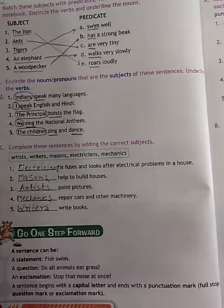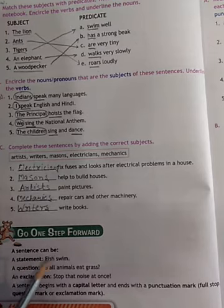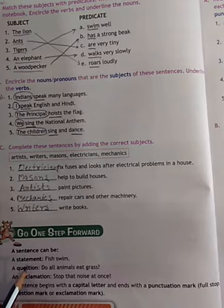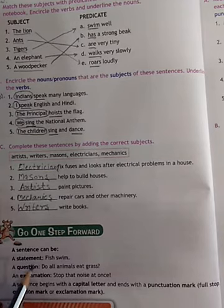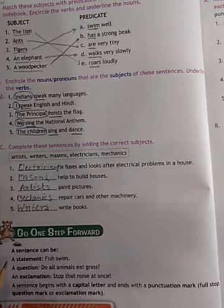A sentence, let's see, what is sentence? A sentence can be a statement. Ek vaakya, ek statement bhi ho sakta hai. For example, fish swim. The purpose of the statement is only to give information.